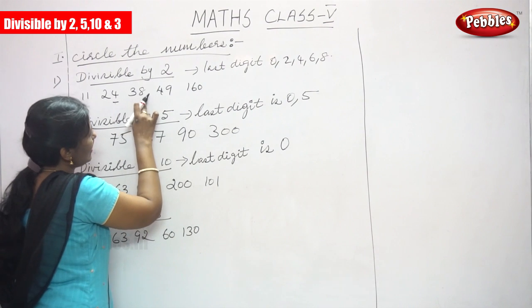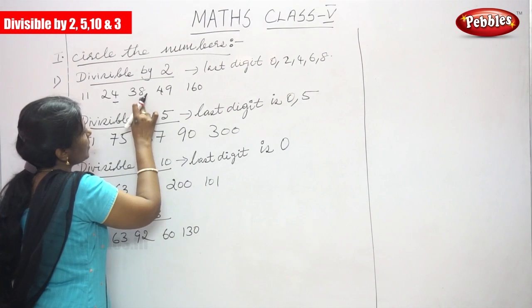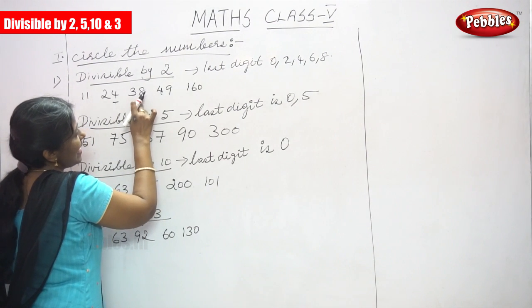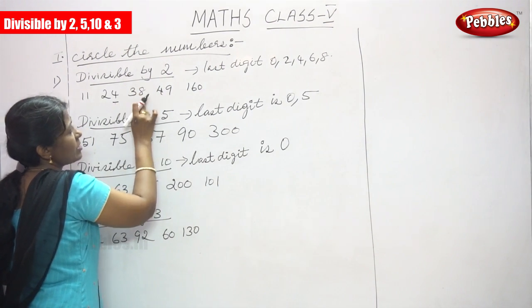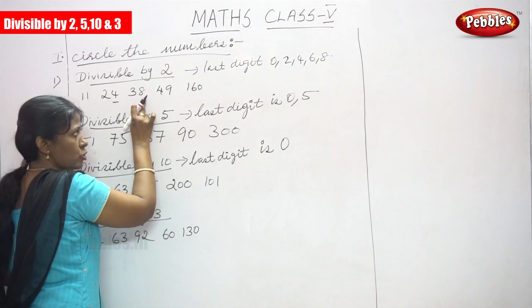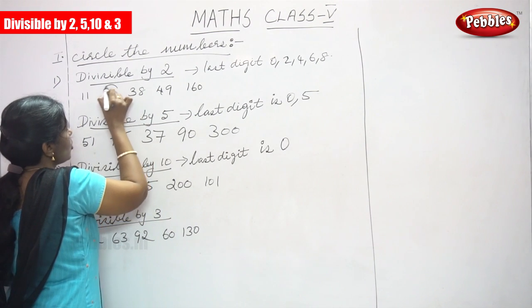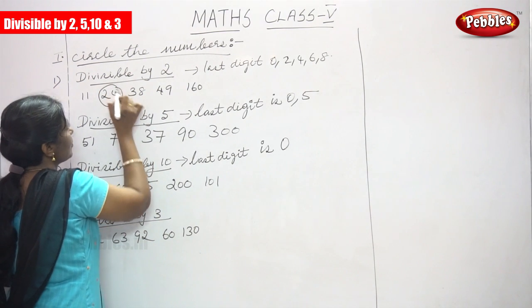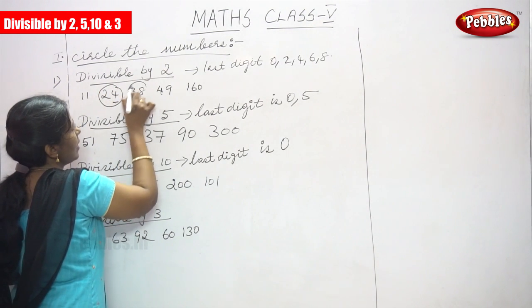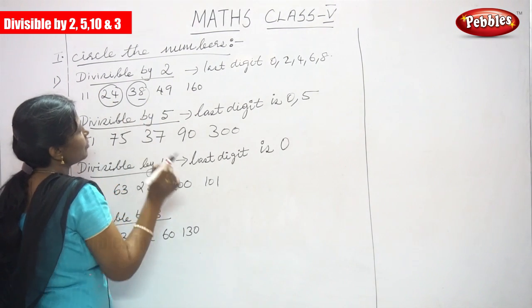38 — the last digit ends with 8, so it is divisible by 2. So I circle the number.